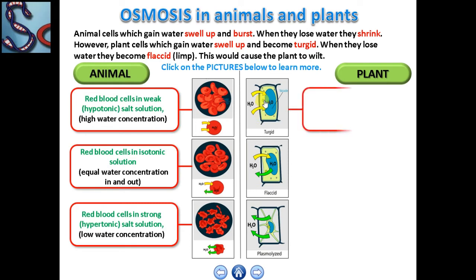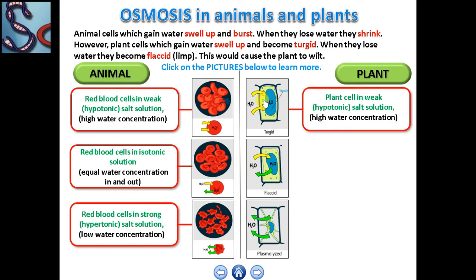Plant cells will swell up until they become turgid when placed in a weak salt solution or pure water. They will not burst as they have a strong cellulose cell wall. Water will diffuse into the cell by osmosis from a high water concentration to a low water concentration through the selectively permeable cell membrane.